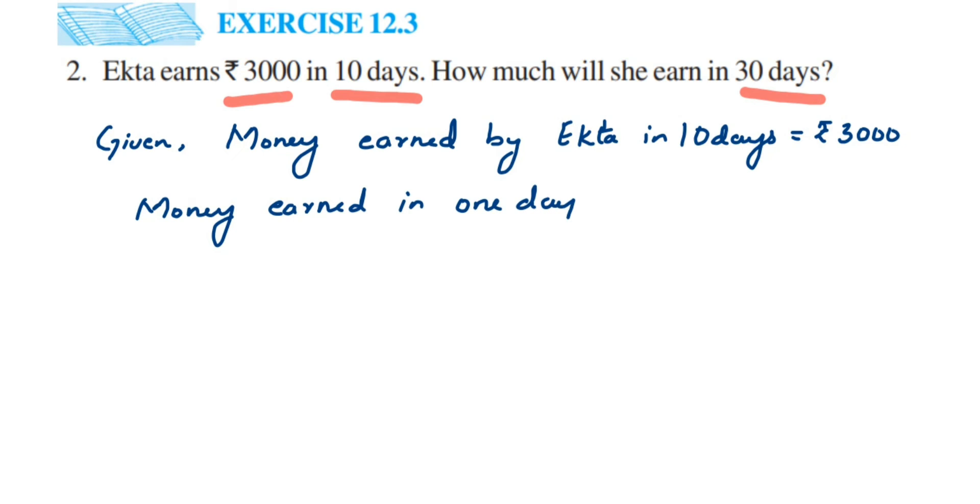3000 divided by 10. You can cancel this - in 10 table, 10 ones are 10, 10 threes are 30, and we have two zeros. So we'll get 300, rupees 300. So in one day she's earning 300 rupees.